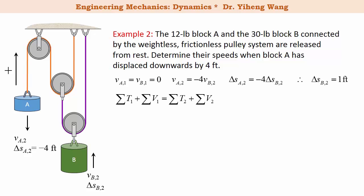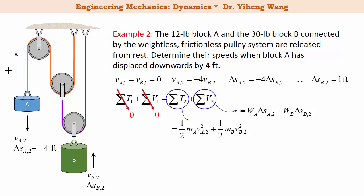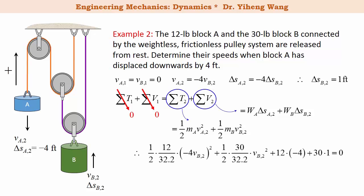Here is the conservation of energy equation for this system of two blocks. The initial total kinetic energy and potential energy are both zero, with each block's initial position chosen as its datum. At the final state, the total kinetic energy is the sum for both blocks, and the total potential energy equals the sum of each block's weight multiplied by its respective change in displacement. Substituting all known information — where Va2 is replaced by negative four times Vb2 — we have one equation and one unknown, from which we can solve for Vb2 and then Va2.